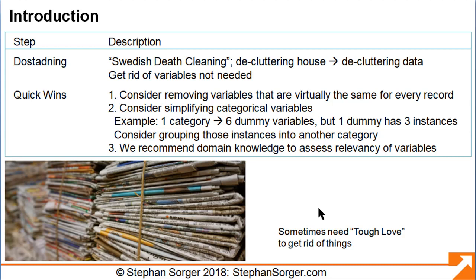One of those dummy variables could have only three instances of being true in the entire dataset. Consider grouping these instances into another category. And third, we recommend those with domain knowledge review the data to assess the relevancy of the variables.